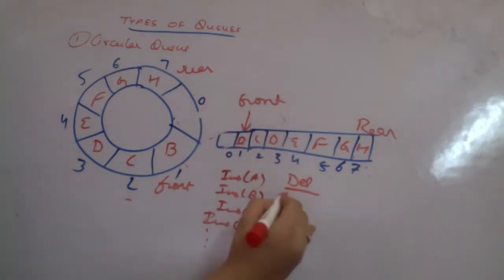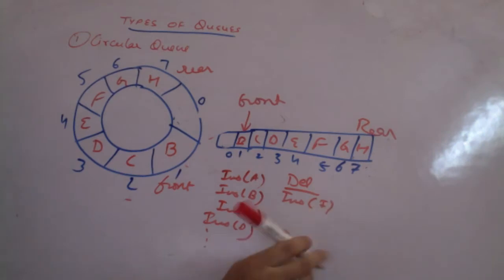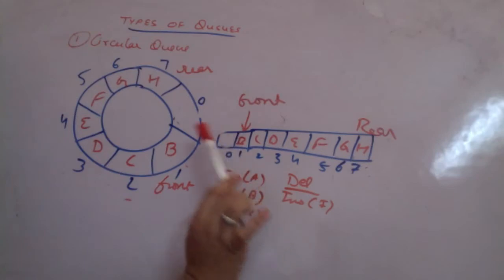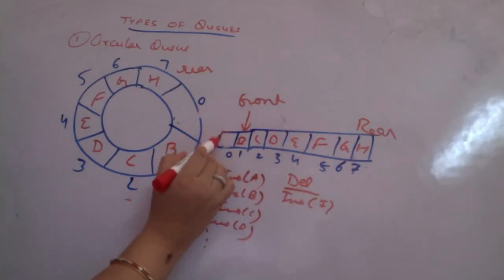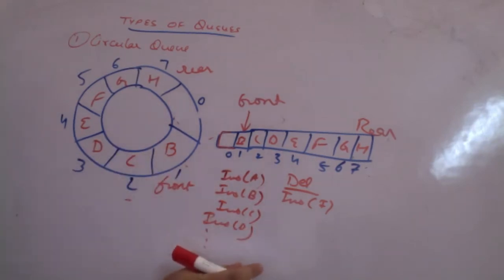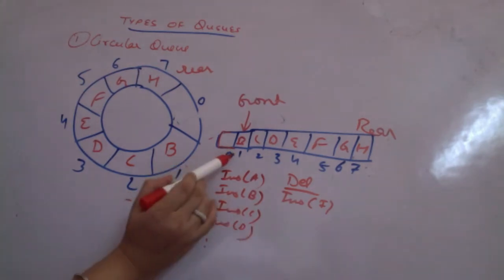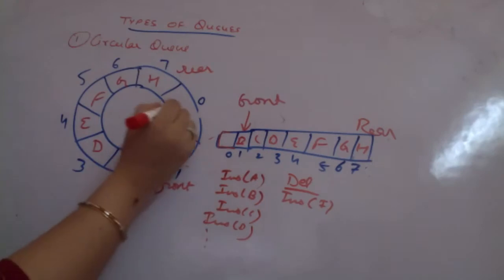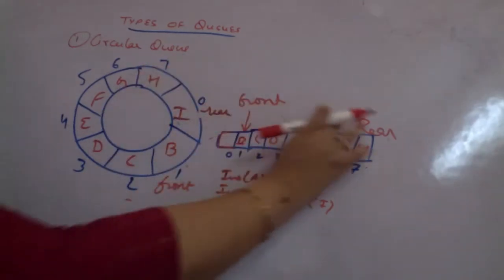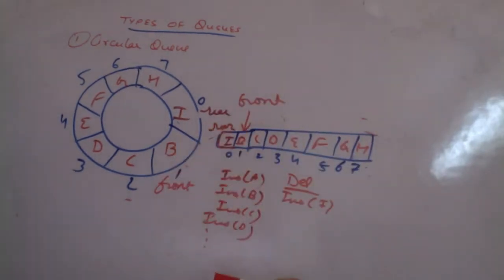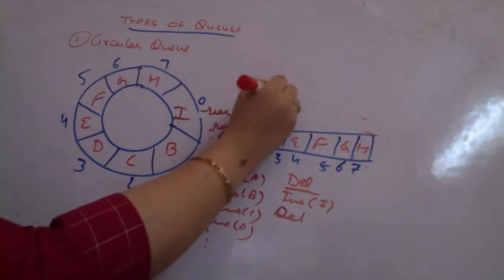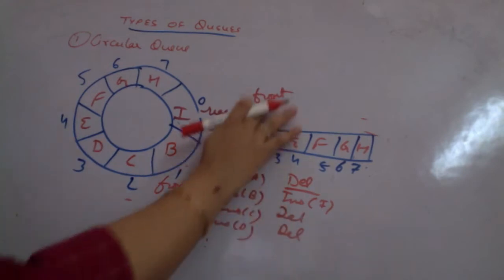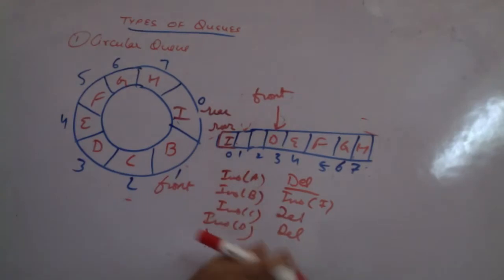Now if I call insert I, we are able to insert because there is space. The condition we check is whether there is space in the queue. Rear has reached max minus one, but since front is not at zero there is still one space. So I is inserted at position zero and rear wraps around there — this is a circular queue. You again call deletion: B is deleted, front moves. Call deletion again: front moves, D becomes the front. You can still insert and rear keeps moving.